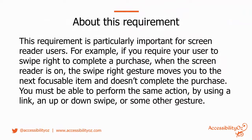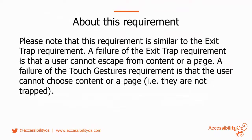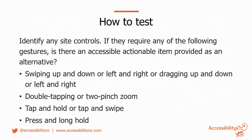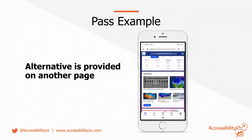This requirement is particularly important for screen reader users. For example, if you require your user to swipe right to complete a purchase, when the screen reader is on, the swipe-right gesture moves you to the next focusable item and doesn't complete the purchase — you must be able to perform the same action by using a link, an up-and-down swipe, or some other gesture. The failure of the exit trap requirement means the user can't escape from content, whereas the failure of touch gestures means the user can't choose content — they're not trapped but unable to proceed. To test, identify any site controls that require the listed gestures and check whether an accessible actionable item is provided as an alternative.